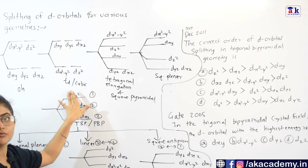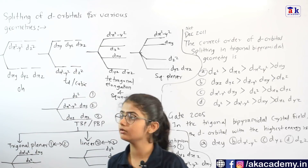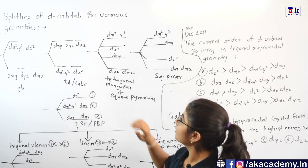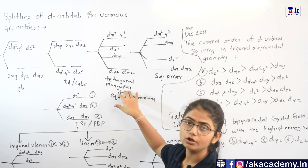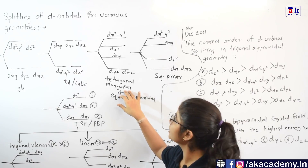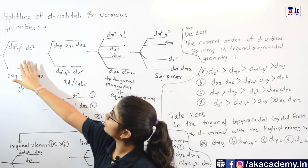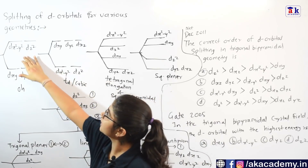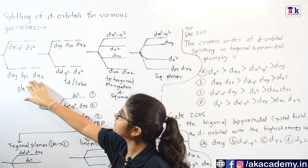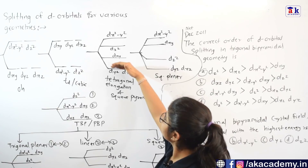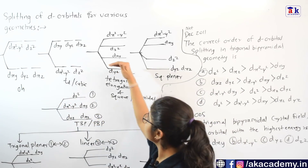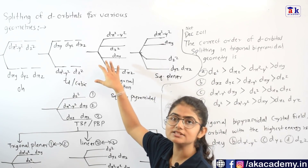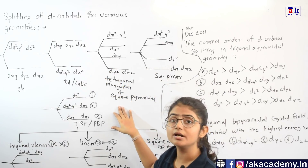A similar kind of diagram is applicable for cubic geometry also. For tetragonal elongation, as seen in Jahn-Teller discussion, DZ square gets stabilized and DX square minus Y square has higher energy. Among the T2G set, the Z-component-containing orbitals have lower energy and DXY has higher energy. This same diagram is also applicable for square pyramidal geometry.